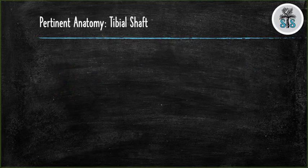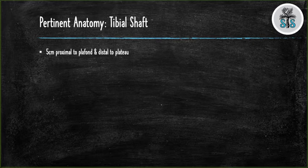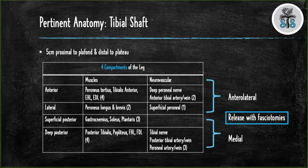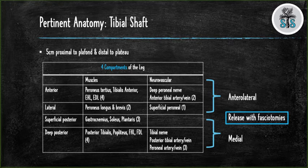The tibial shaft is defined as the area five centimeters proximal to the plafond and distal to the tibial plateau. The leg consists of four compartments: anterior, lateral, superficial posterior, and deep posterior. It is worthwhile spending time knowing what is contained in each compartment. When performing a fasciotomy of the leg, you will make two incisions. The anterolateral incision will release the anterior and lateral compartments, and the medial incision will release the superficial and deep posterior compartments.